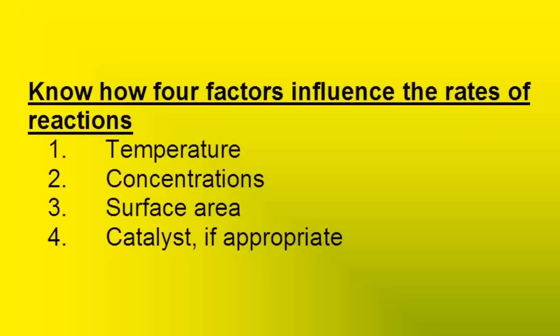There are four general factors that influence the rate of a chemical reaction: temperature of the reactants, the concentration of the reactants, surface area of the reactants, and a catalyst, if applicable to the reaction.